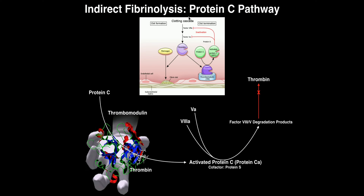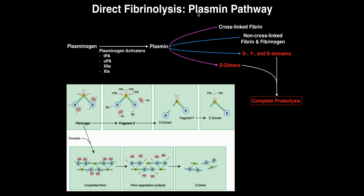In the previous video we discussed indirect fibrinolysis which acts via the protein C pathway. This pathway ultimately shifts the balance of fibrin formation and fibrinolysis towards fibrinolysis, but these proteins don't touch fibrin — they just prevent new fibrin from forming. There are two ways to get rid of fibrin: prevent its formation, which is that pathway, and actually physically degrade the fibrin, which is the plasmin pathway we'll discuss in this video.